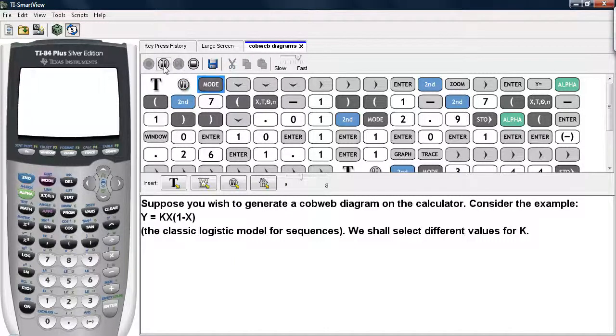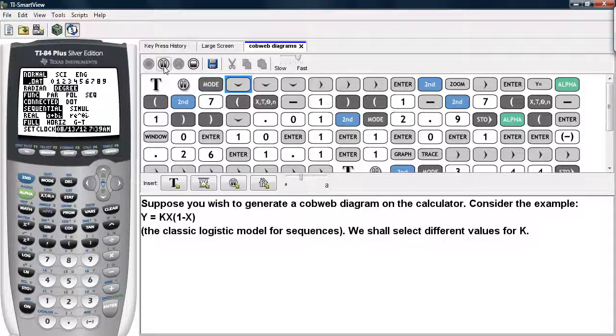So first thing we do is we hit mode. We scroll down until we get to the f-u-n-c row. We scroll over until we highlight seq, that's sequence. Then we hit enter.